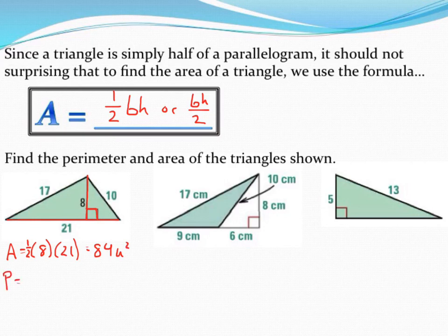And perimeter is add up the three sides in this case that make up the triangle. So my three sides this time are 17, 10, and 21. Don't include the 8. It's not an actual side of the triangle. Adding those together get me a perimeter of 48 units.